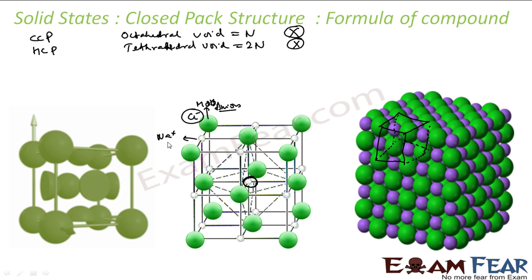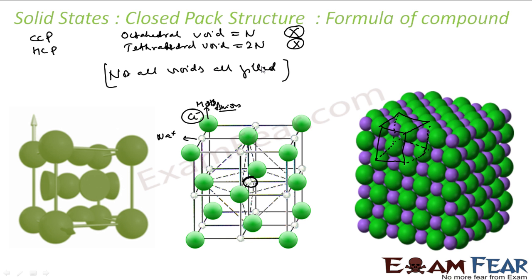If my cations are very small, they generally occupy tetrahedral voids. If they are bigger, they occupy octahedral voids. The percentage of void occupancy can actually help derive the formula of the compound. Please note, not all tetrahedral and octahedral voids are filled — some are empty also. So based on that percentage, we can find the formula of the compound.